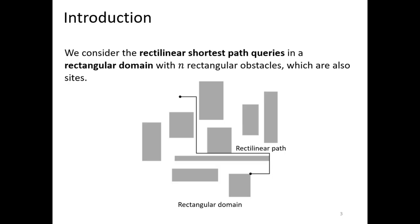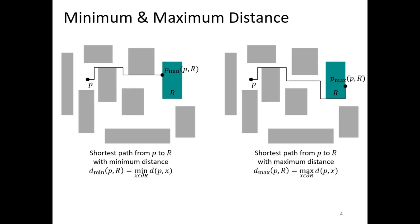We simply consider the rectangular object and the rectangular path. Note that the rectangular domain is made by N axis-aligned rectangular obstacles, and the rectangular path is the path consisting of axis-aligned line segments. Rectangle rules both sides and obstacles, so we define two distances from a point P to rectangle R, called Minimum Distance and Maximum Distance.